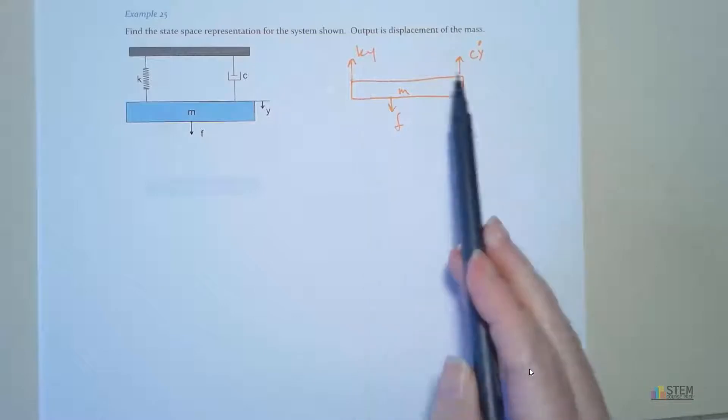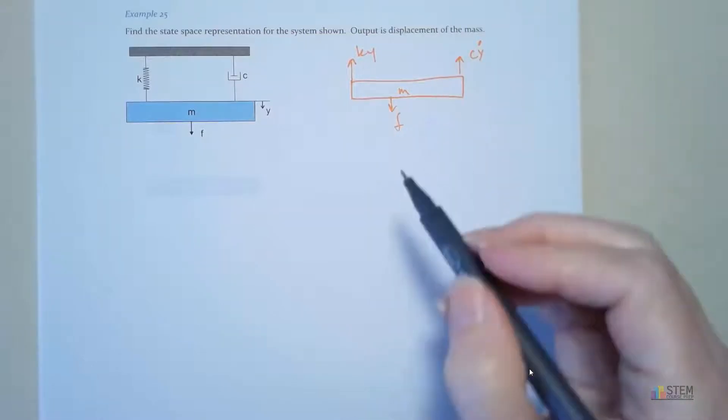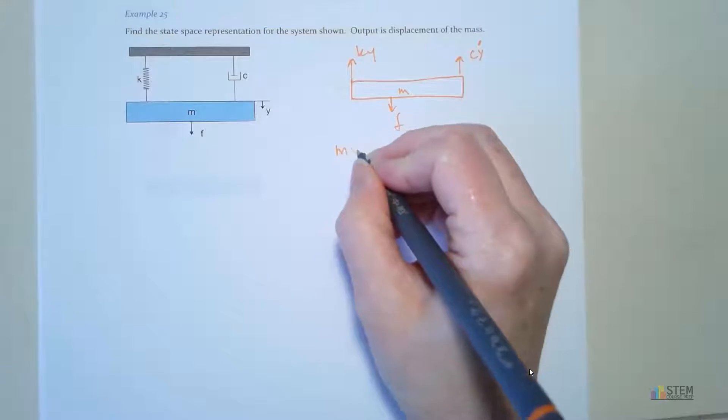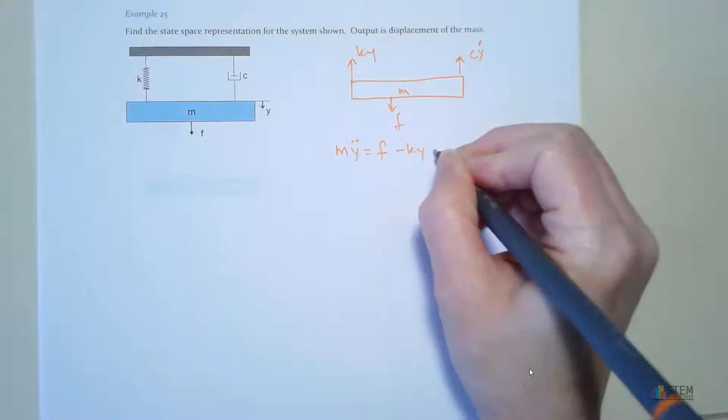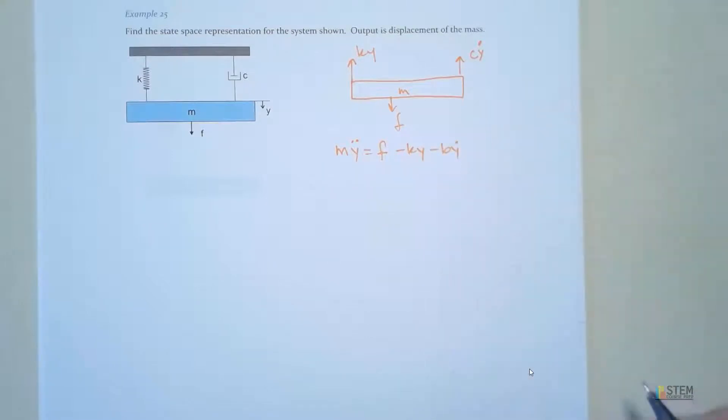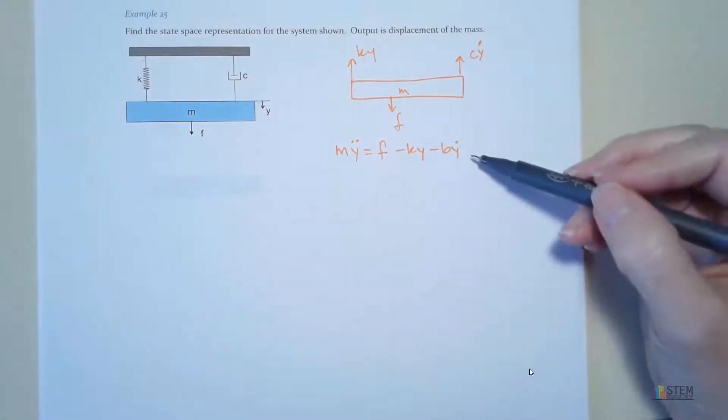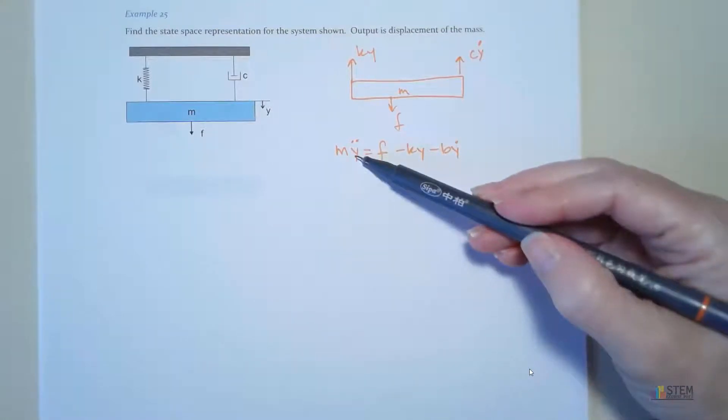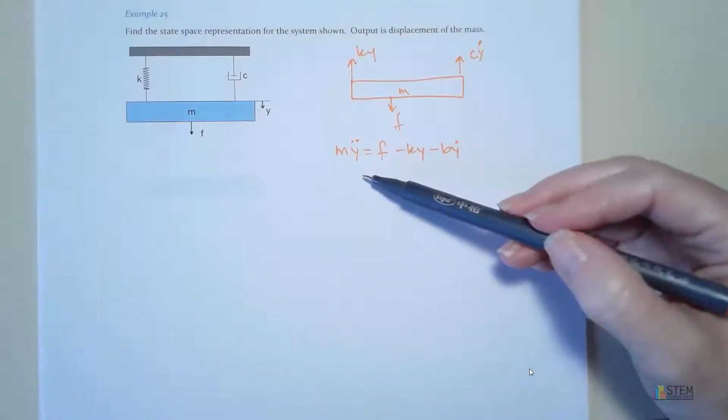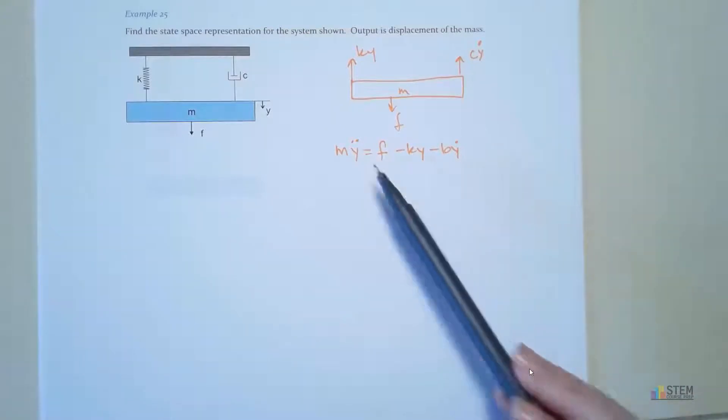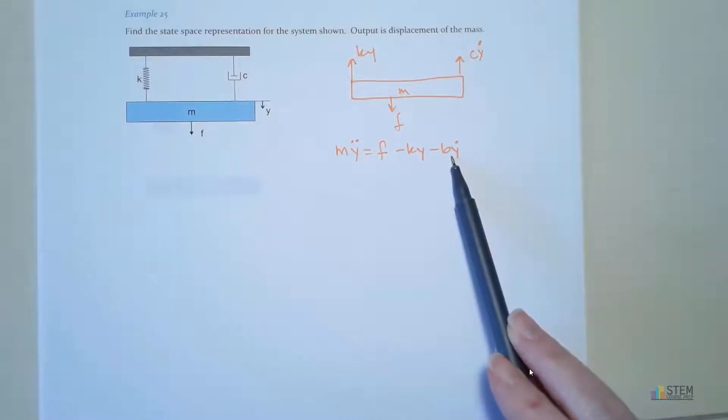Go ahead and get your equation of motion here. If you do that, you're going to have m y double dot equals f minus k times y minus b times y dot. In the state space section, it's going to be better for you to leave this equation in this form because you're going to want y double dot by itself. You don't need to move every y term over and flip the signs around. It's going to be less work to leave it in that form.